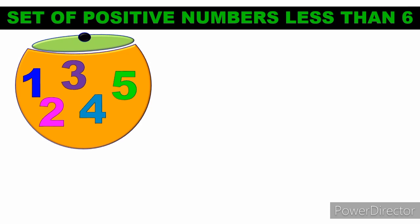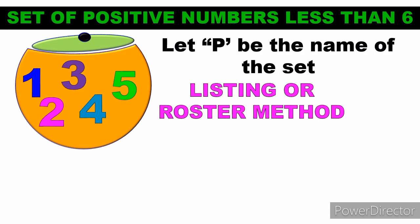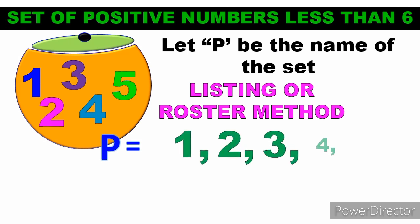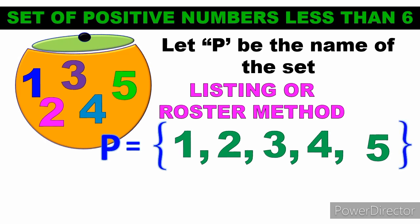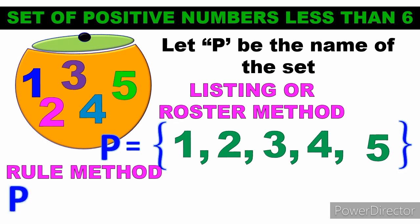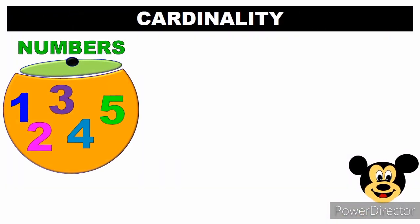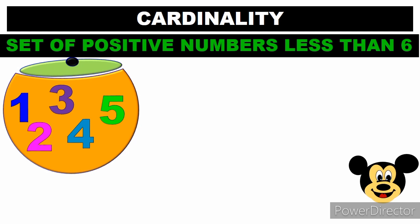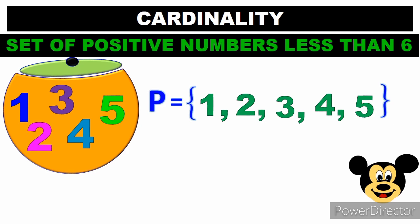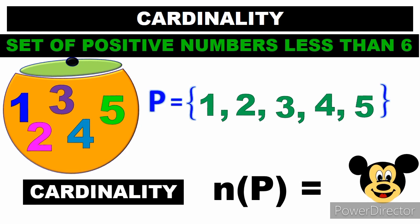Example 1: Set of positive numbers less than 6. Let P be the name of the set. In listing or roster method: P = {1, 2, 3, 4, 5}. In rule method: P = {x | x are positive numbers less than 6}. The cardinality of set P: since the elements are 1, 2, 3, 4, 5, the cardinality is 5. So n(P) = 5.